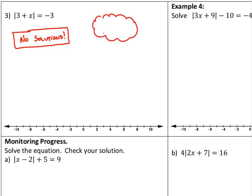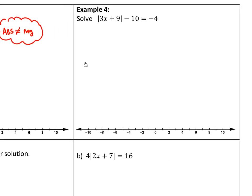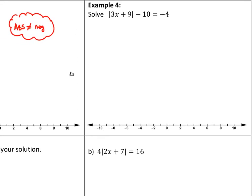Example 4 — this one looks more complicated. It's tempting to say no solutions right away because of the negative on the right, but we can't make the call yet. The absolute value is not isolated: we have the absolute value of 3x plus 9 minus 10 equal to negative 4. We have to undo that subtracting 10 by adding 10 to both sides. Now the absolute value of 3x plus 9 equals positive 6, and we can make the call — two solutions.